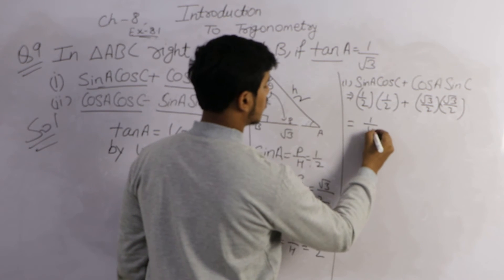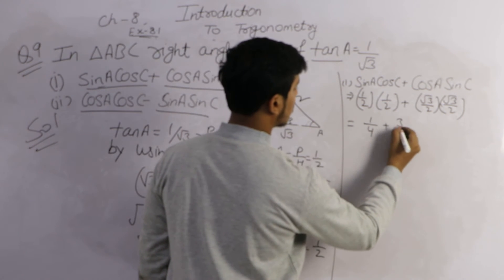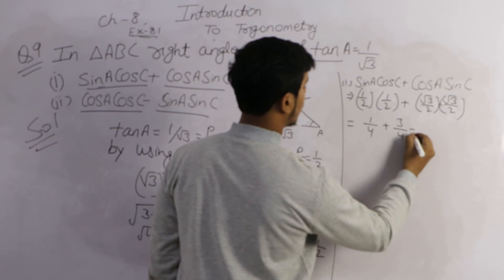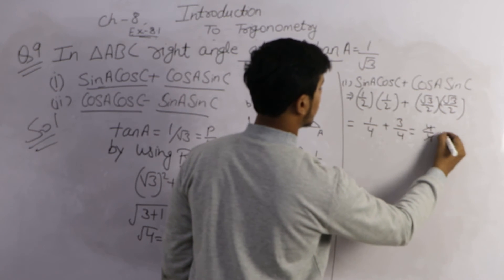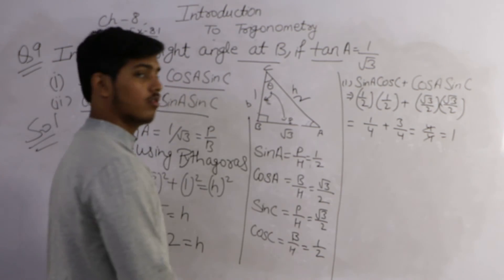1 times 1, 2 times 2, 4. Root 3 times root 3, 3. 2 times 2, 4. It comes 4 by 4 which is equal to 1.